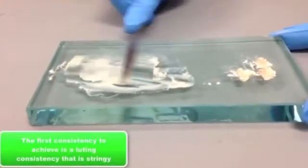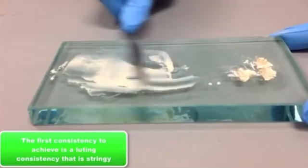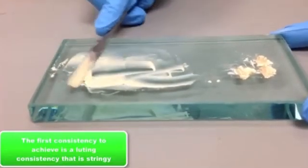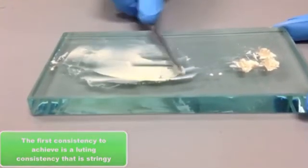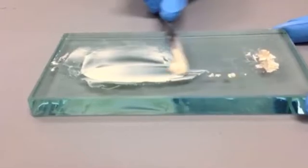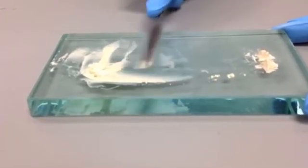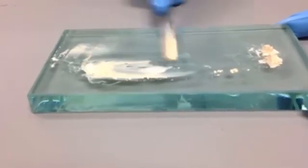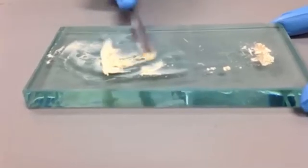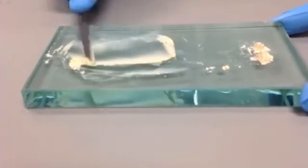And like I said before, the first consistency we're trying to achieve is a looting consistency. And that always comes first because it's more of a stringy, whereas a base consistency is going to be more of a ball that you can roll into a ball.